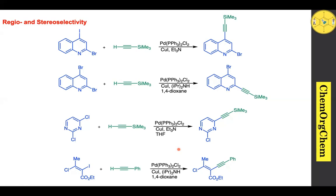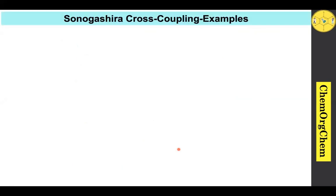Now that we have covered the basics, catalytic cycle, copper-free catalytic cycle, and important points of the Sonogashira cross-coupling reaction, let's look at some important examples to solidify our understanding.